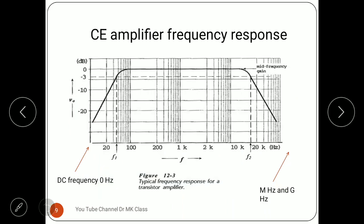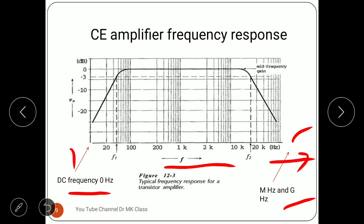This graph shows the typical frequency response of a CE amplifier. The left side shows low frequency and the right side shows high frequency — going up to megahertz and gigahertz. The middle region is the mid-band frequency. At low frequencies, gain slowly increases as frequency increases, then becomes constant over a certain range. After a certain high frequency, the gain decreases because transistor operation changes with frequency.